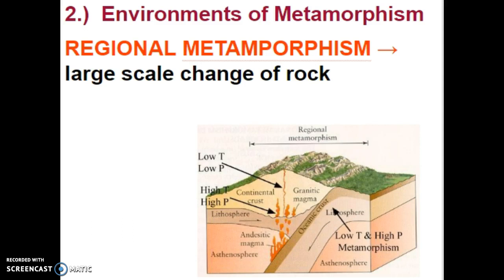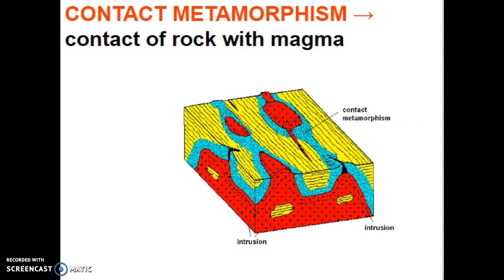So where does metamorphism happen? Where does all of this heat, pressure, or chemical activity come from? It comes from underneath the surface of the earth. Regional metamorphism is a very large-scale change of rock that happens generally very deep underground, and it can change a whole mountain range from one rock type to another. Contact metamorphism is what we get with a little bit of hotspot activity or volcanism. Contact metamorphism indicates that change won't happen unless the rock is physically touching or in contact with the magma, so it happens on a much smaller scale.